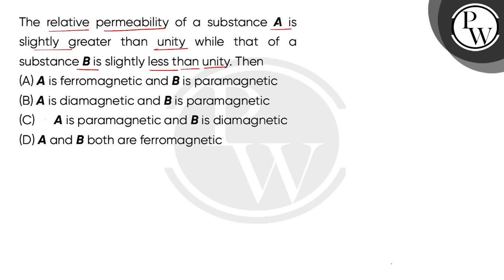So children, we have given a substance A and another substance is B. Now, the relative permeability of substance A is slightly greater than unity. Unity means one and relative permeability of substance B is slightly less than unity.